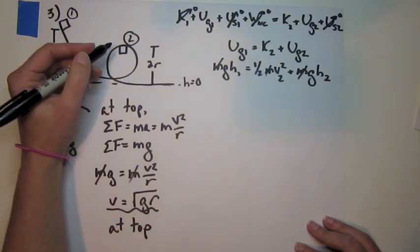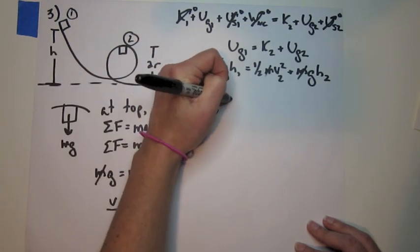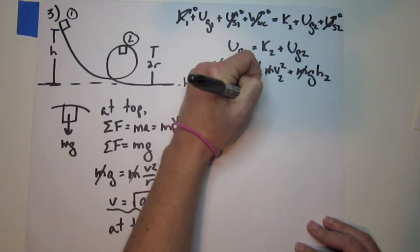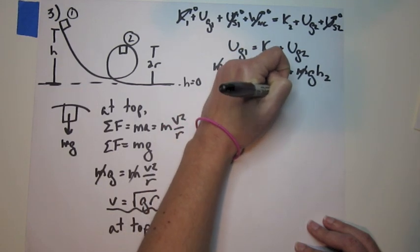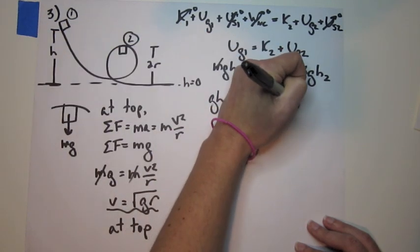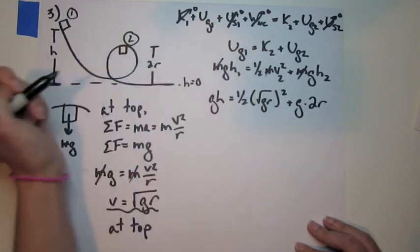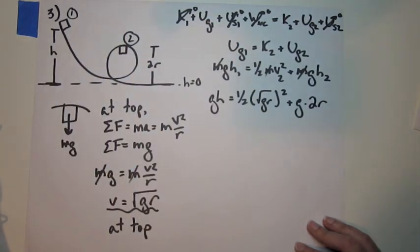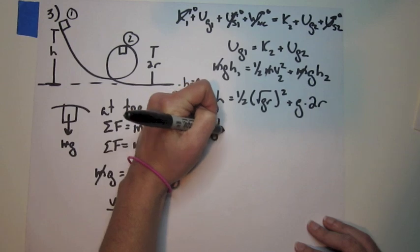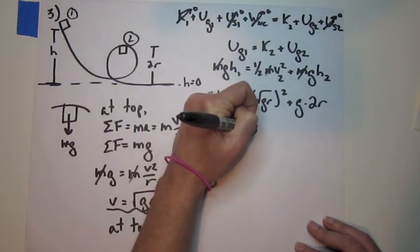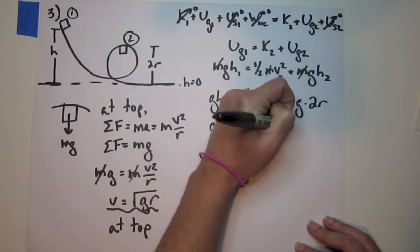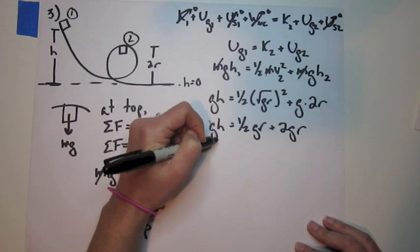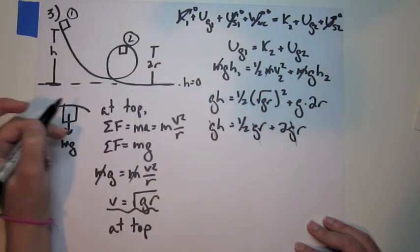gh equals one-half square root of gr squared plus g times 2r. Our goal is to get h in terms of r, so as you can see we're going to get there. So gh equals one-half gr plus 2gr. g's all cancel.